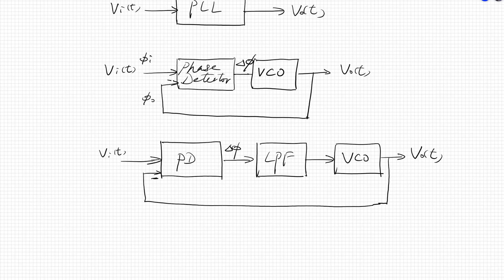In practice, we will add a low-pass filter just to filter out the high-frequency components, so only the difference, delta phi, is emphasized before it goes into the voltage controlled oscillator.